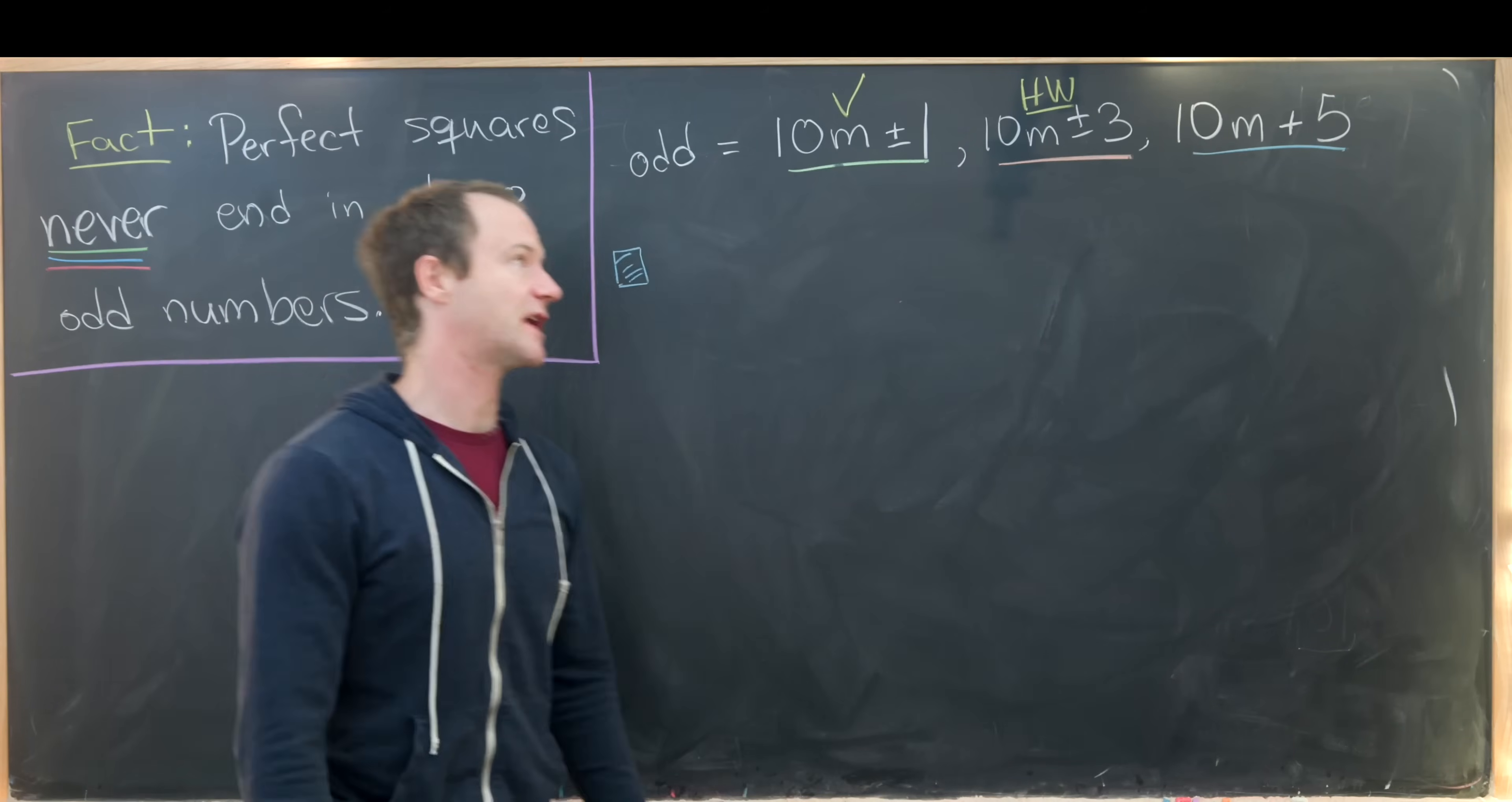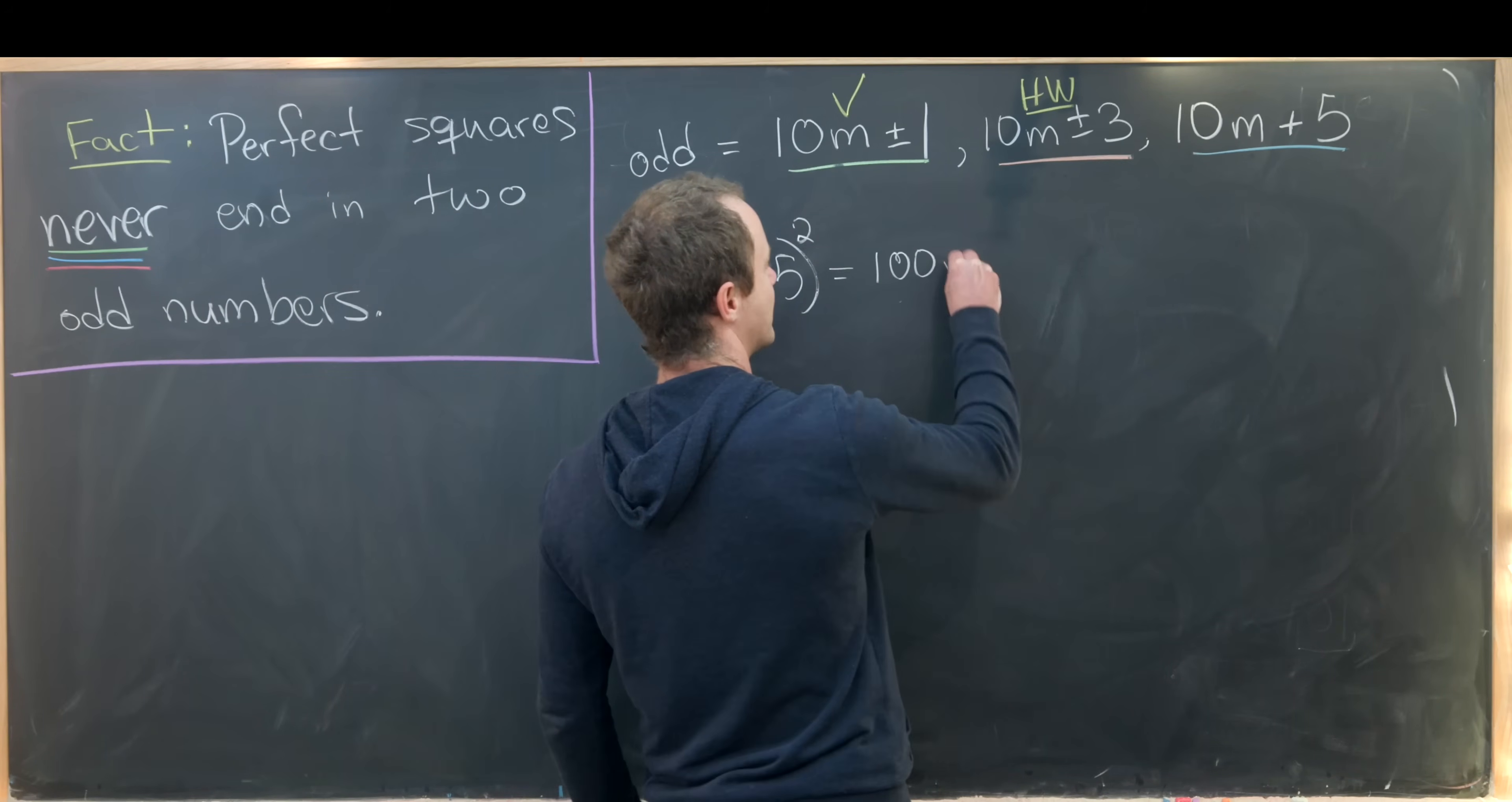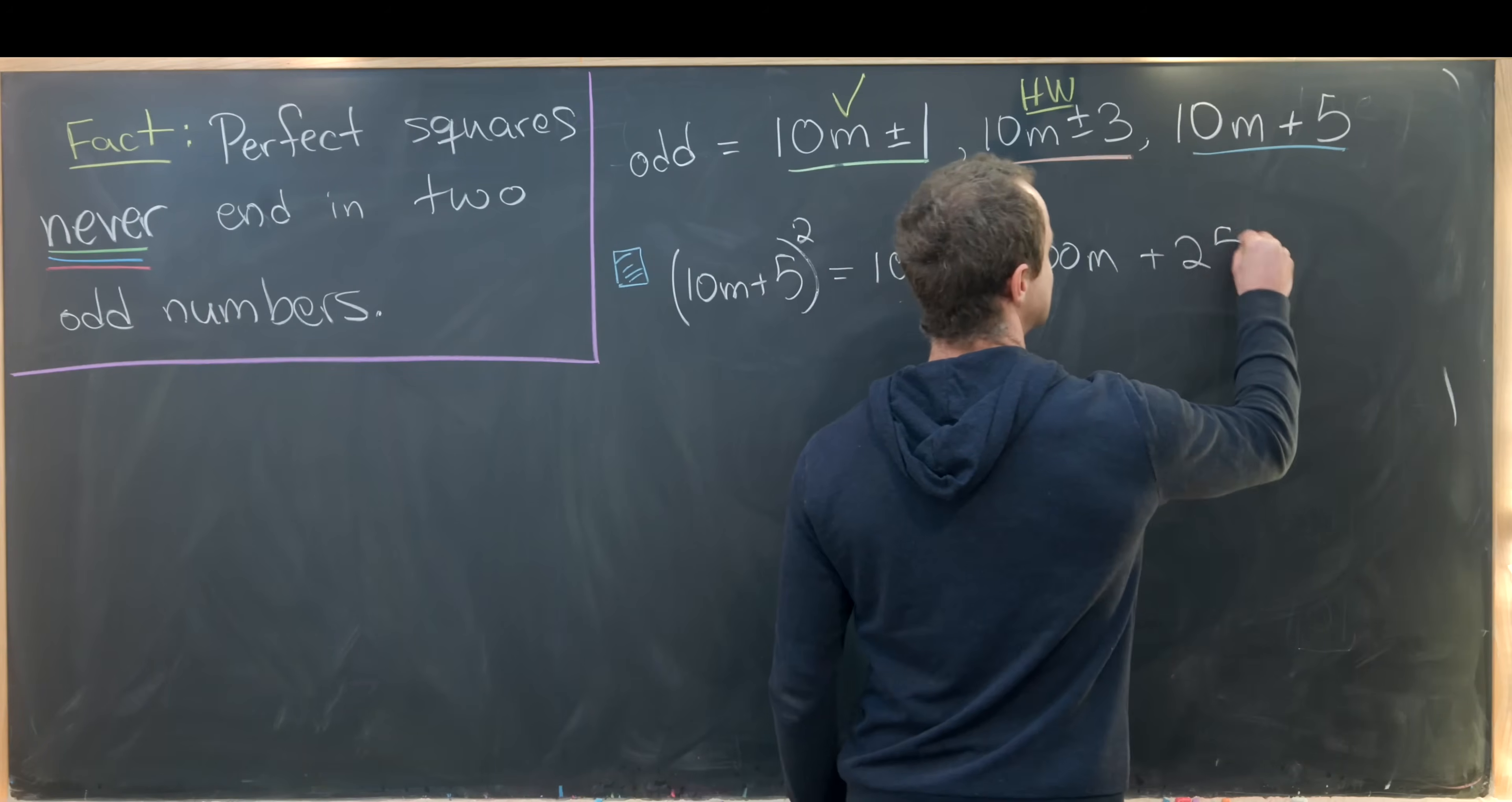And now we'll look at this final case when we have the number of the form 10m plus five. So that means we need to square that 10m plus five squared. This actually works out very, very quickly. So notice that gives us 100 times m squared. And then we'll have plus 2 times 10m times 5.